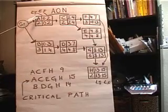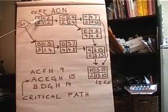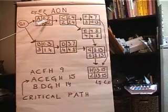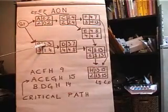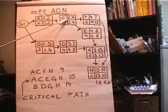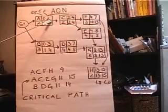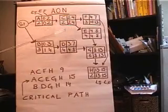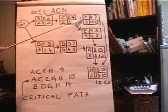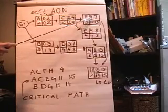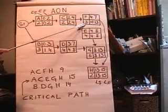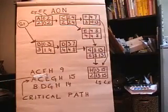So to do the forward pass, what we do is we start A time 0, that's the earliest start, earliest finish is time 2. 0, 3. Then the 2 is the earliest start for activity C because that comes out of A. 2 plus 2 is 4. F comes out of C, so that 4 is now the earliest start, 4 plus the time of that activity, 3, 4 plus 3 is 7, and so on.